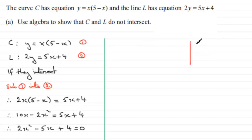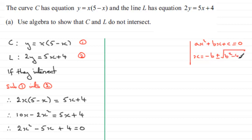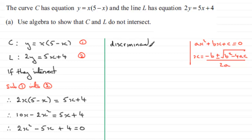Remember that if you've got a quadratic equation of the form ax squared plus bx plus c equals 0, the roots are given by the quadratic formula: x equals minus b plus or minus the square root of b squared minus 4ac, all divided by 2a. There is no solution for x if you square root a negative value. So b squared minus 4ac — called the discriminant — equals b squared minus 4ac.